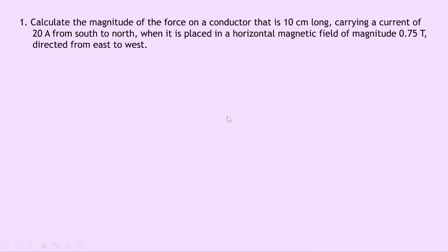Question one says to calculate the magnitude of the force on a conductor that is 10 centimetres long carrying a current of 20 amps from south to north when it is placed in a horizontal magnetic field of magnitude 0.75 tesla directed from east to west. The best thing to do first is to sketch the situation so you know what you're doing. So here's the wire or conductor with a length of 10 centimetres and it's got a current of 20 amps flowing upwards from south to north and we've also got a magnetic field with magnetic induction 0.75 tesla going from east to west.